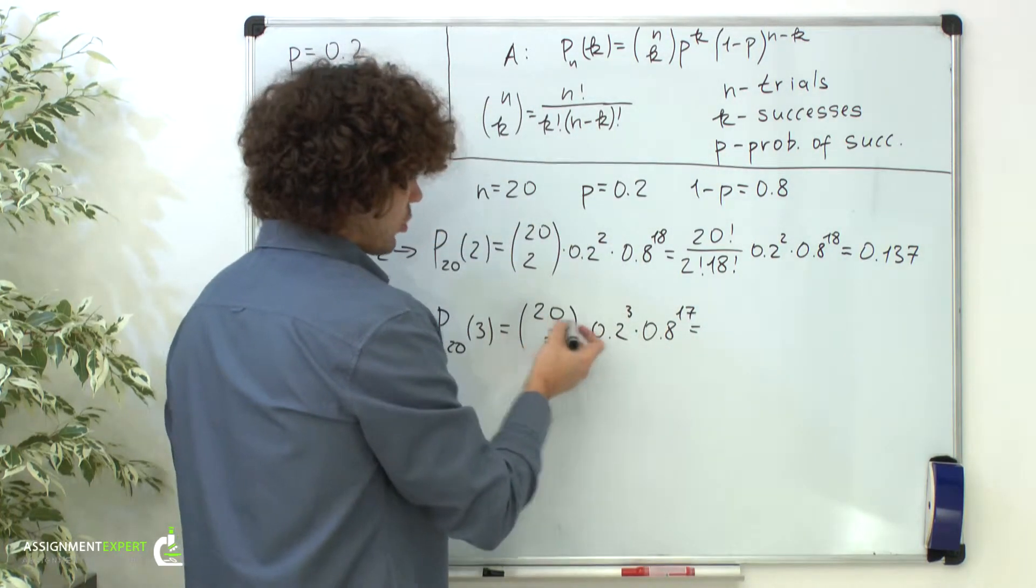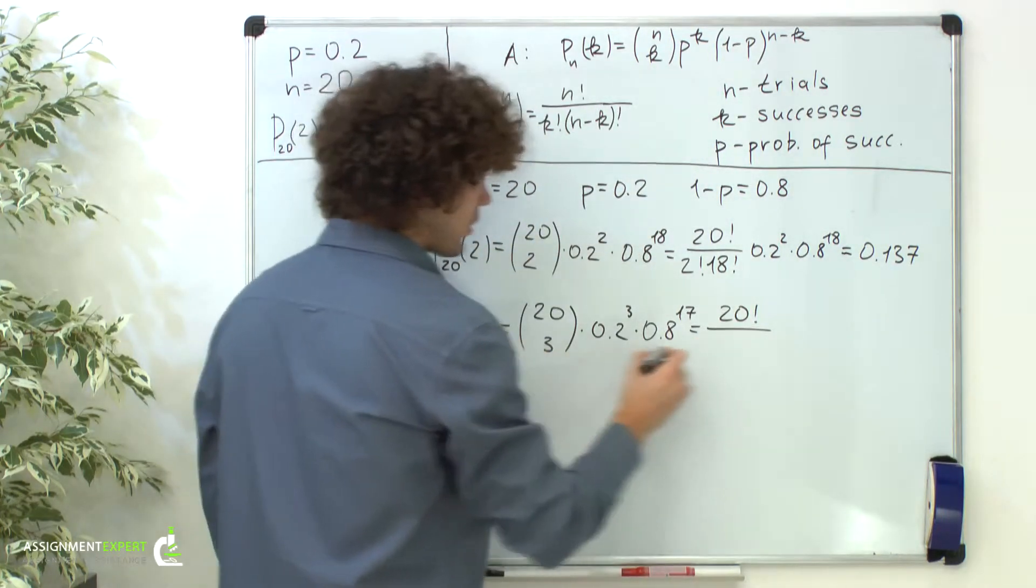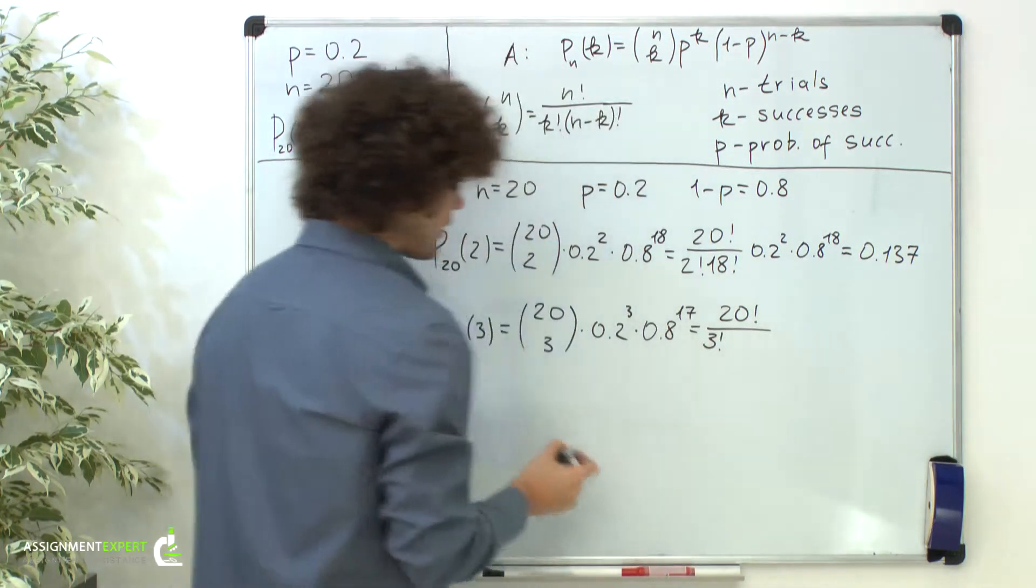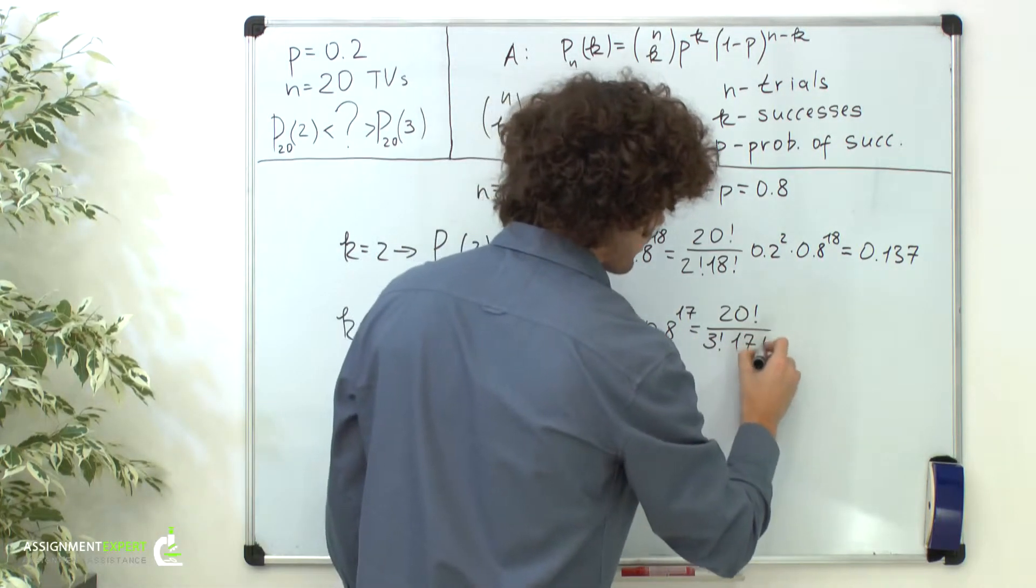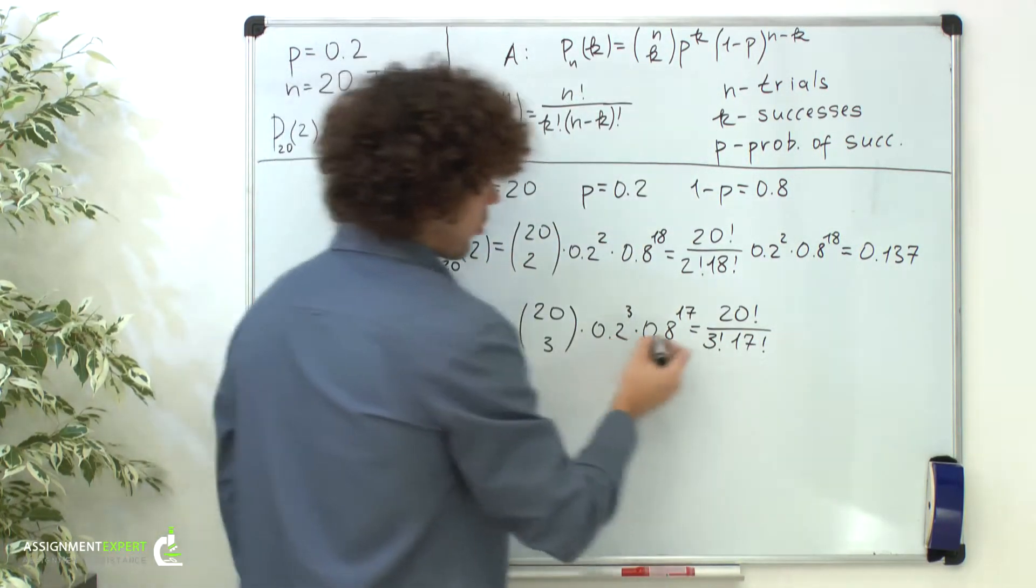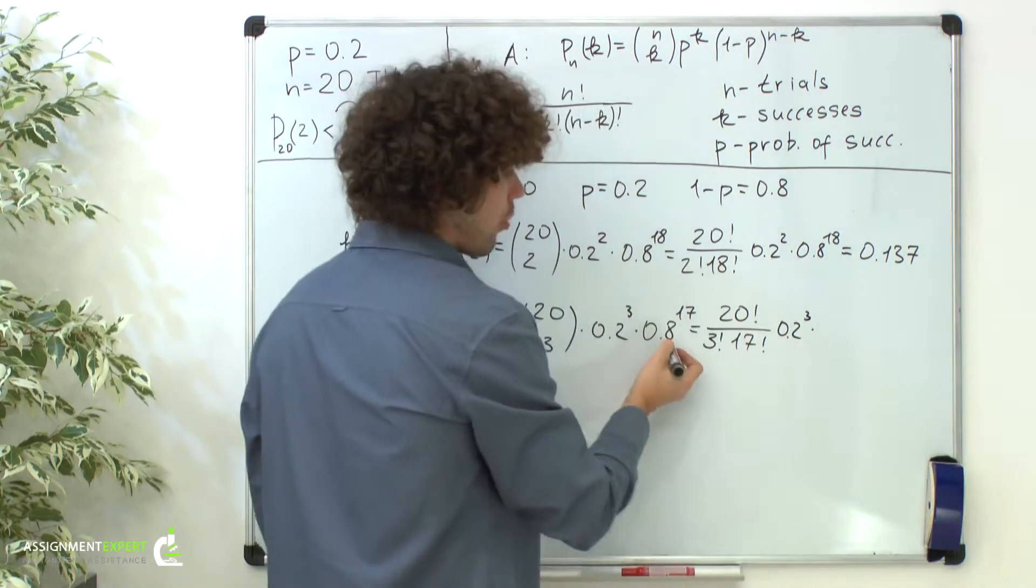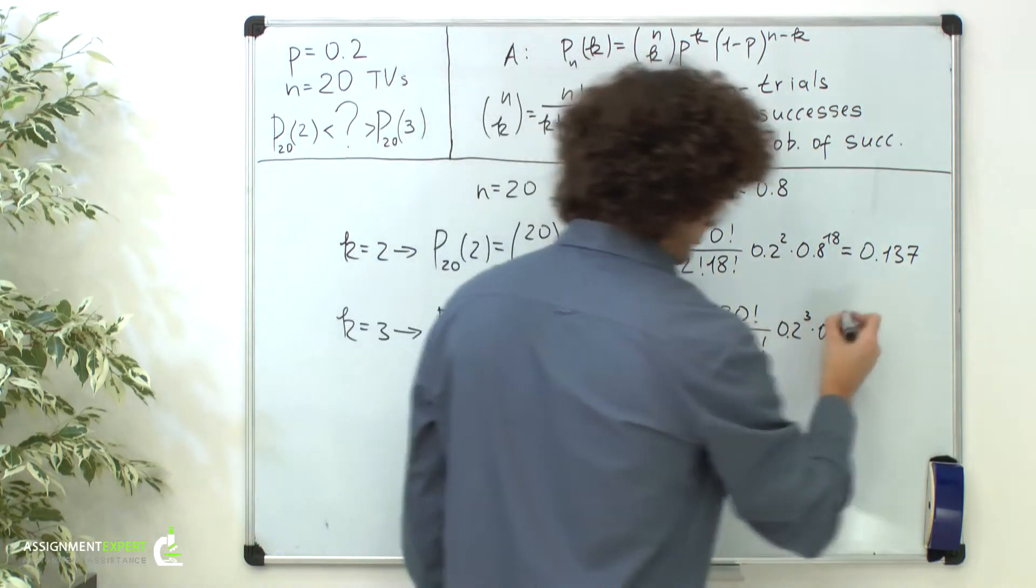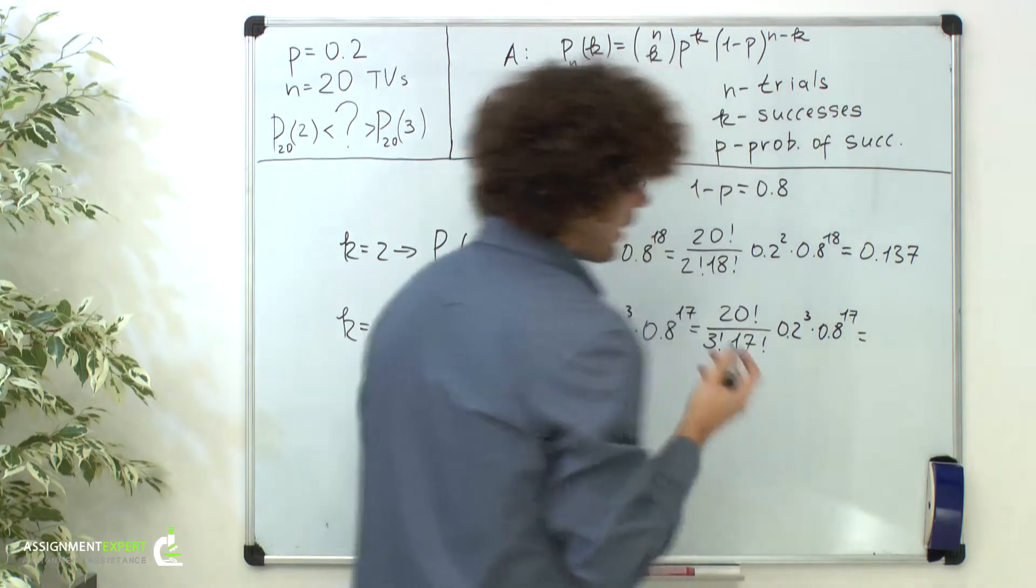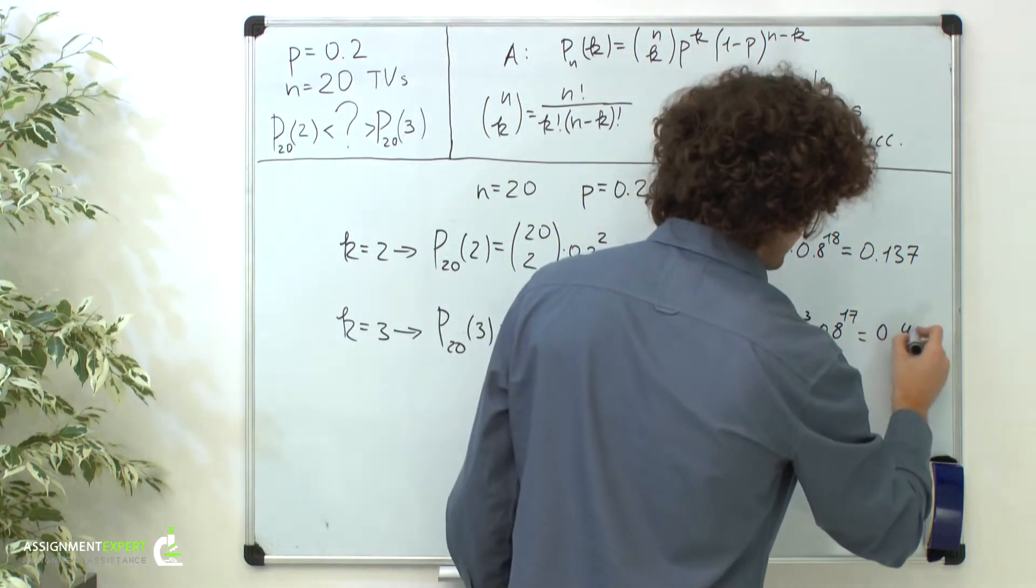Here we obtain 20 factorial over 3 factorial times 17 factorial, times 0.2 cubed, times 0.8 raised to the 17th power. And this probability equals 0.41.